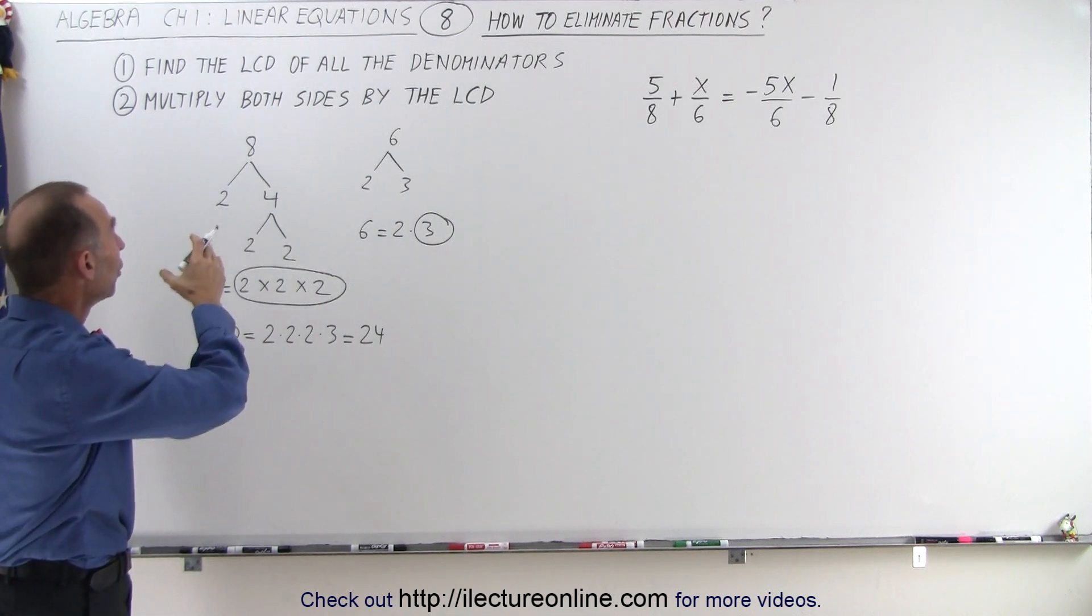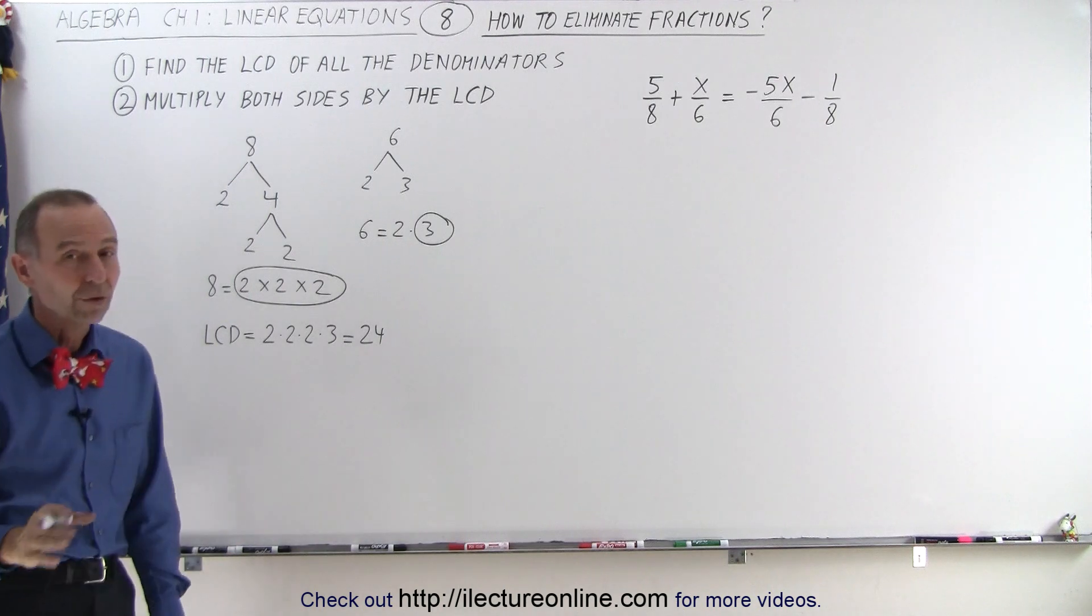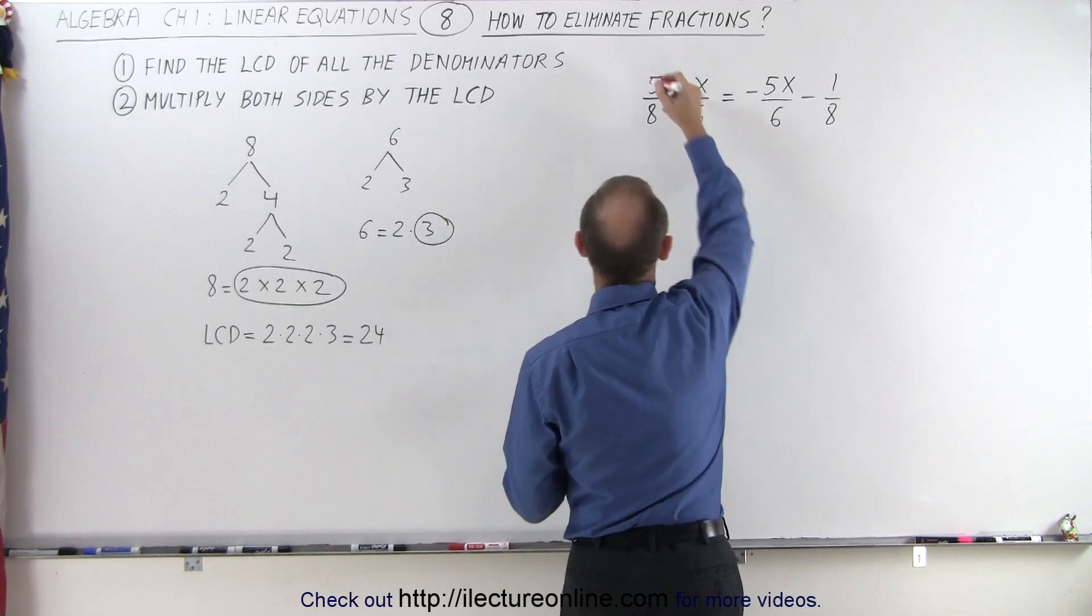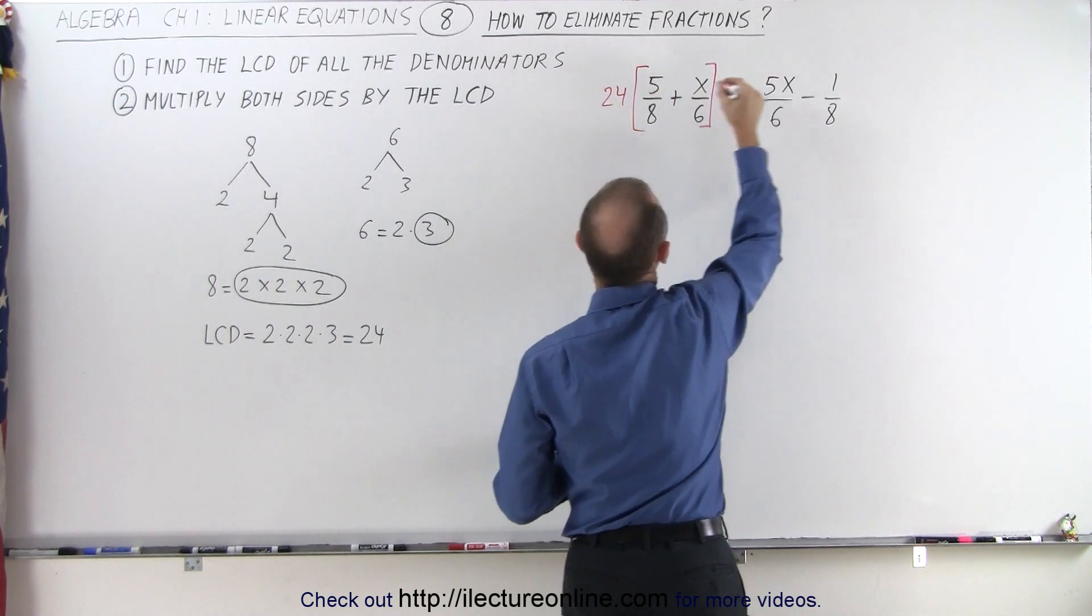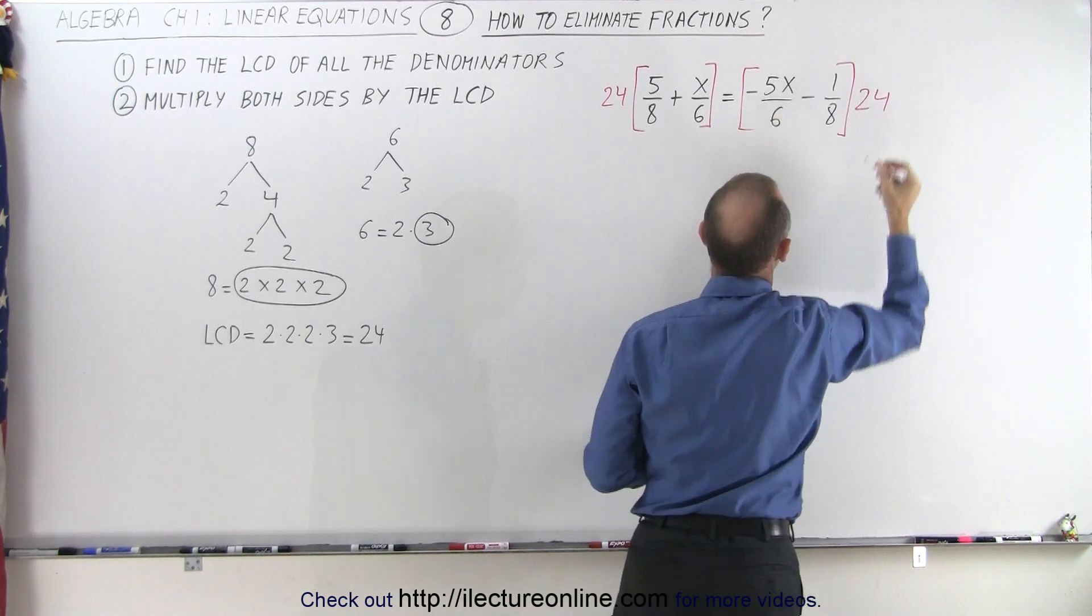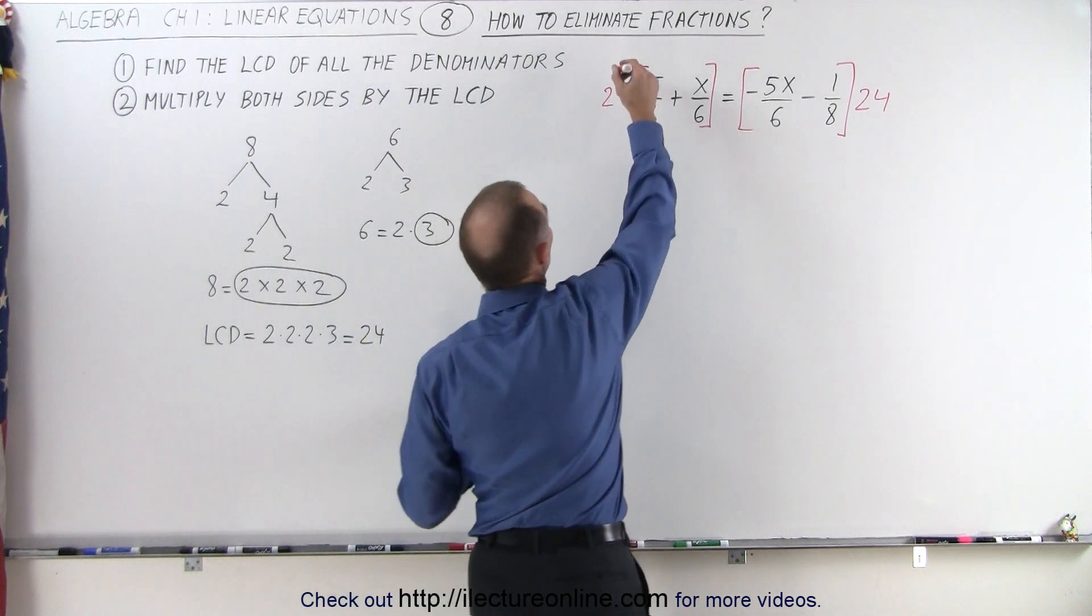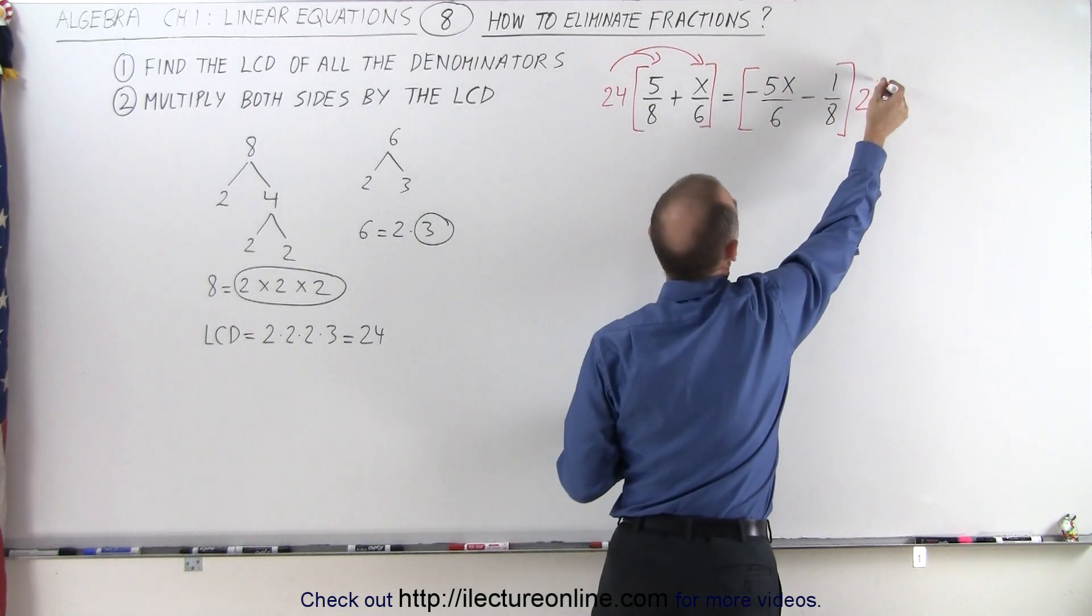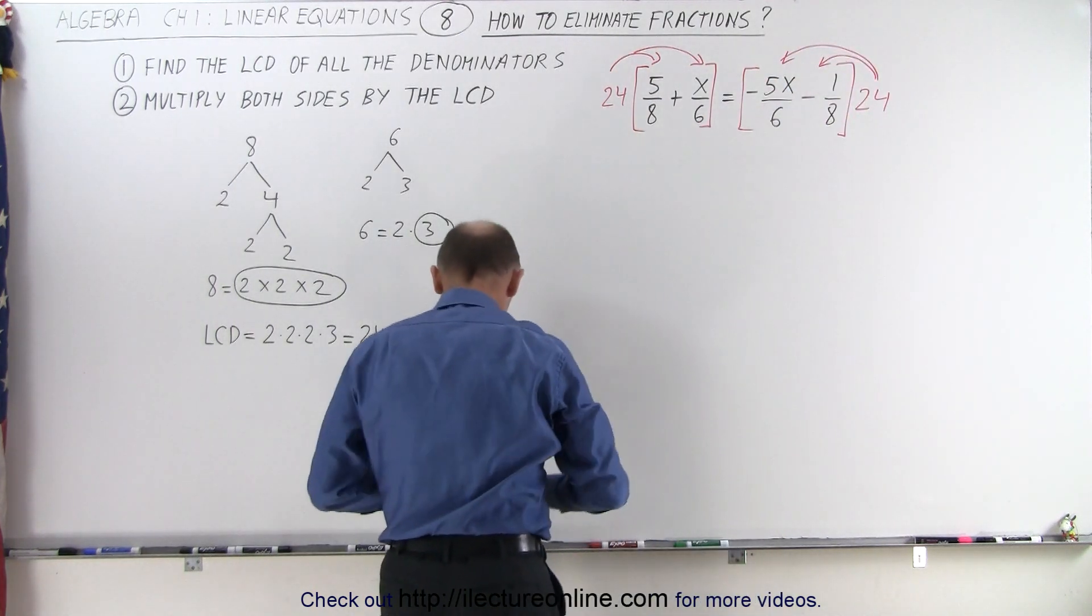By the rule we are told, once we've found the lowest common denominator, we have to multiply both sides of the equation by that lowest common denominator, which means we're going to multiply the left side by 24 and the right side by 24. What we need to do at this point is distribute the 24 over both terms, on the left and on the right side.